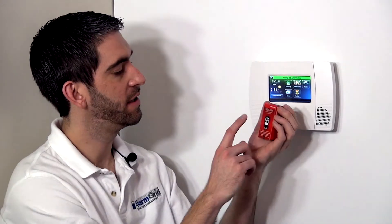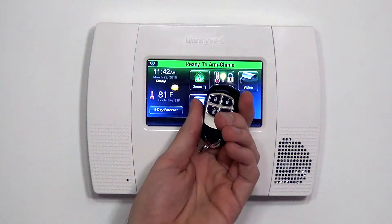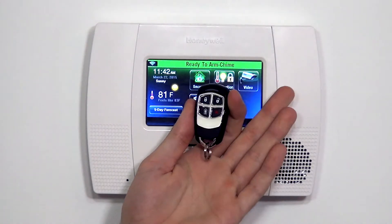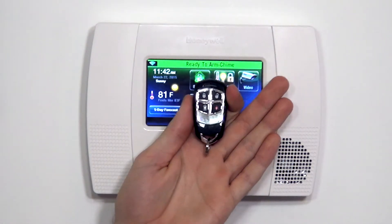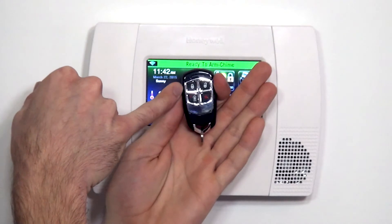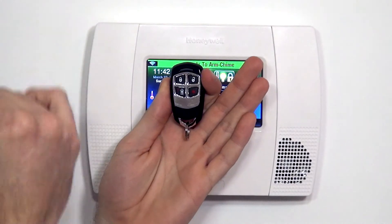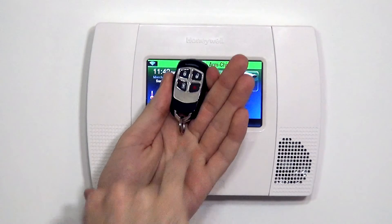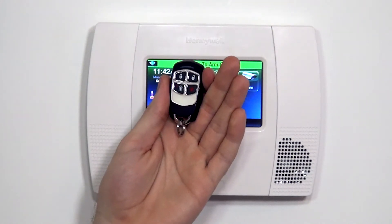Very similar to the standard 5834-4, the 5834-4EN allows you to arm and disarm your wireless Honeywell security system with the touch of a button. We have four buttons on the fob. We have an arm away, which is our lock symbol, and we have our disarm, which is our unlock symbol.